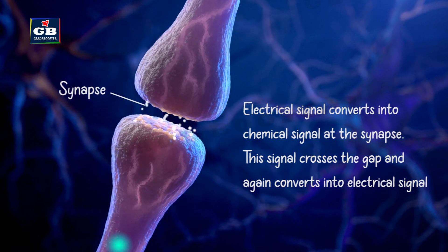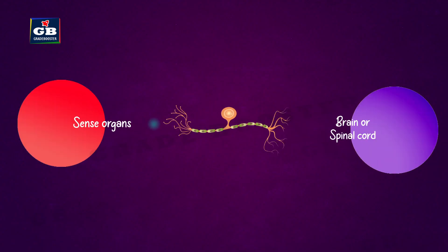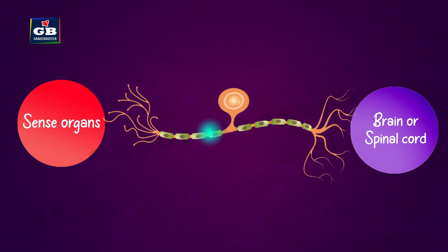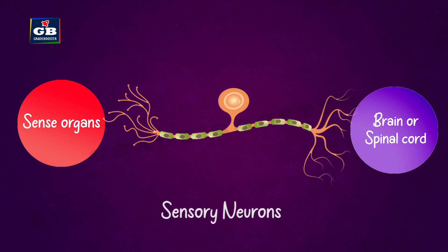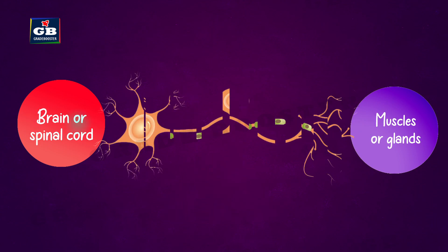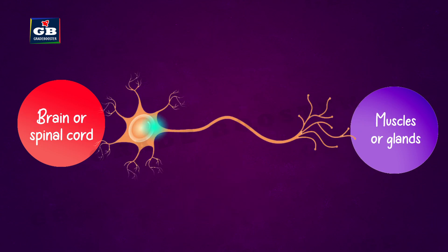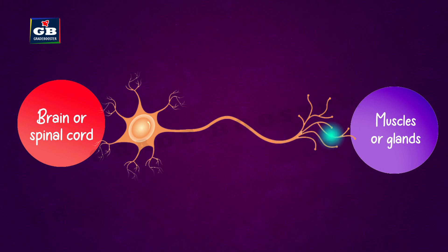Neurons that carry information from sense organs to the brain or spinal cord are called sensory neurons. Neurons that carry information from the brain or spinal cord to muscles or glands are called motor neurons.